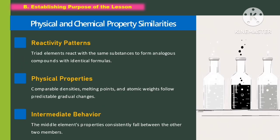The physical and chemical property similarities within triads include: first, reactivity patterns — triad elements react with the same substances to form analogous compounds with identical formulas; second, physical properties — comparable densities, melting points, and atomic weights follow predictable gradual changes; and third, intermediate behavior — the middle element's properties consistently fall between the other two members.